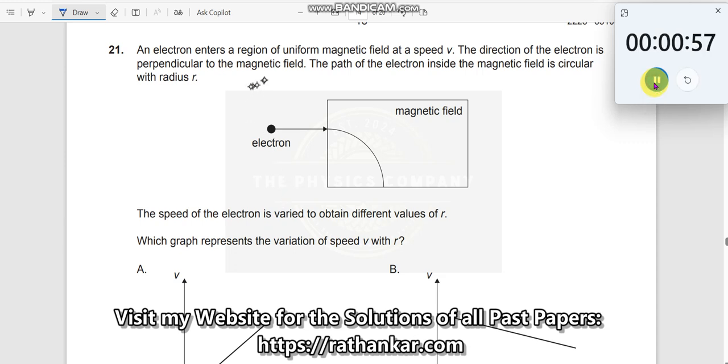Question number 21. An electron enters a region of uniform magnetic field at a speed v. The direction of the electron is perpendicular to the magnetic field.